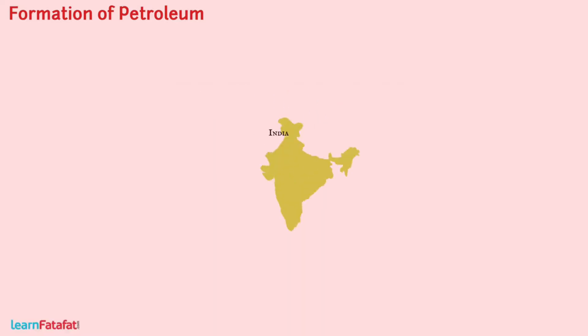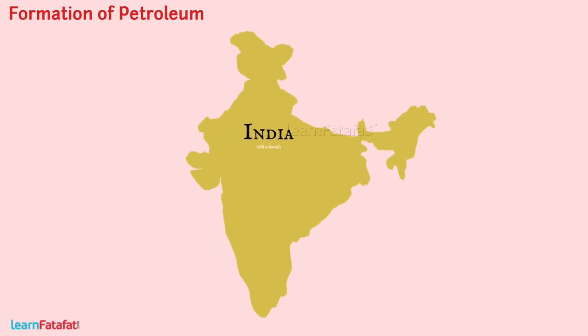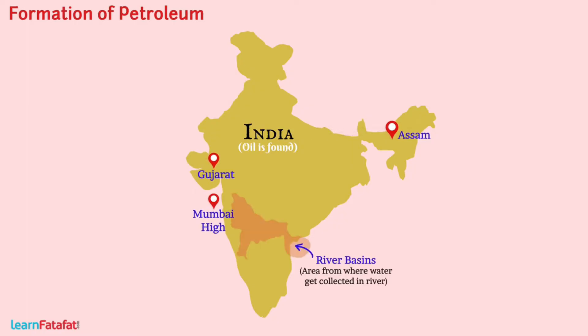In India, oil is found in Assam, Gujarat, Mumbai High, and in the river basins of Godavari and Krishna.